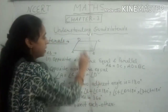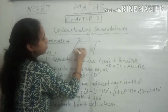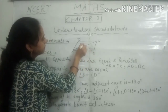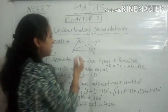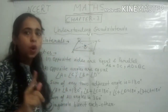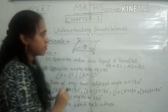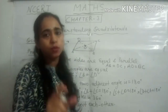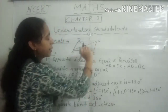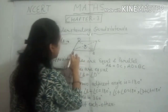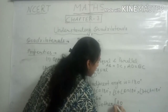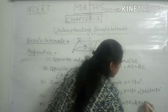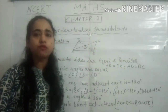The fifth property is that the diagonals of a quadrilateral bisect each other. The diagonals are AC and BD. They intersect at point O. This means AO is equal to OC, and BO is equal to OD. So these are a few properties of quadrilaterals.